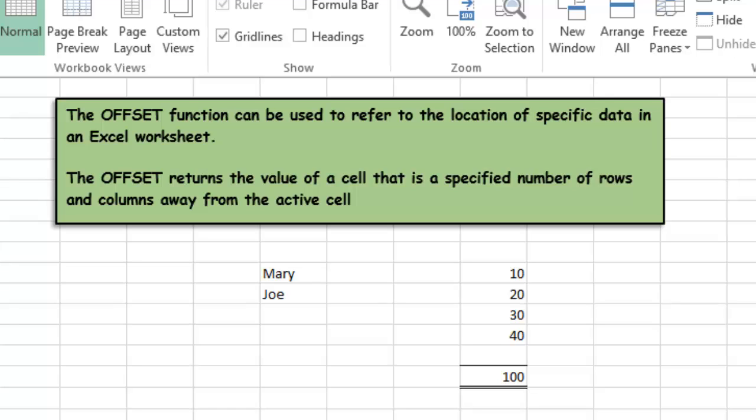We're going to talk about the OFFSET function and I'm going to show you how to use it and how to apply it to the SUM function to make your SUM function dynamic. The OFFSET function can be used to refer to the location of specific data in an Excel worksheet. It will return the value of a cell that is a specified number of rows and columns away from the active cell.